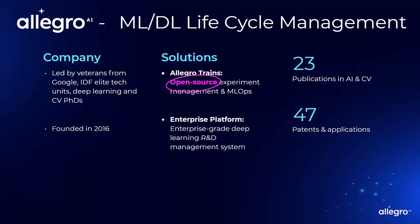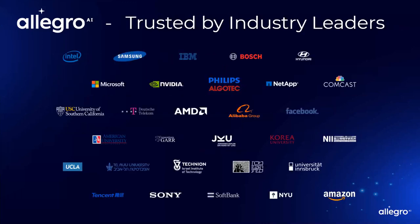We begin with the obligatory two slides about the company. It's a serious company doing machine learning and deep learning lifecycle management. The most interesting thing for you is that we have an open source experiment management platform called Allegro Trains, which is awesome and you should check it out. I also put here the list of industry leaders we have dealings with, because this gives me credibility — what I'm showing is a response to things I've seen in the transition from research to production, based on expertise.